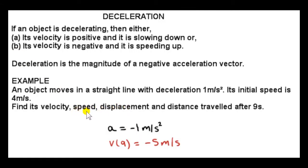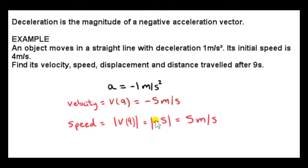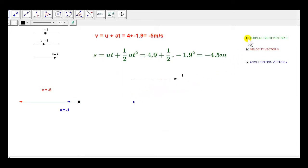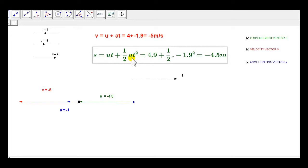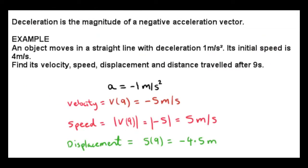The speed is just the magnitude of the velocity. The magnitude of minus 5 is 5 m per second. Now let's look at the displacement vector. Here's the displacement vector at t equals 9 — we can see that it's negative. We plug 4 in for u, 9 in for t, and minus 1 in for a, giving minus 4.5 meters. So the displacement s at time 9 is minus 4.5 meters.